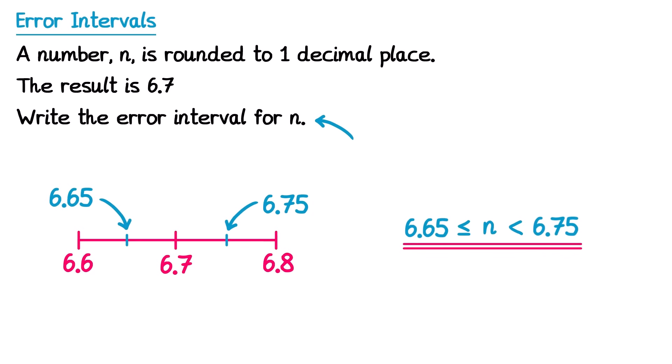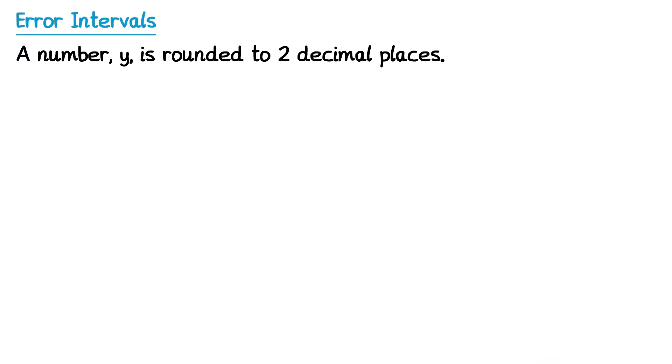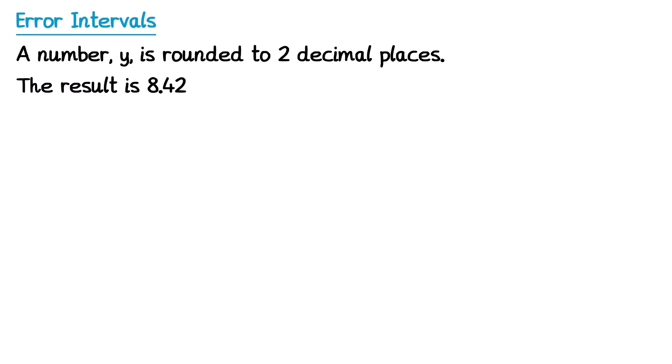There are many different ways of asking error interval questions, and I'm going to go through all of them now. So let's try another one, but this time it's been rounded to two decimal places and the result is 8.42, and we need to write down this error interval.